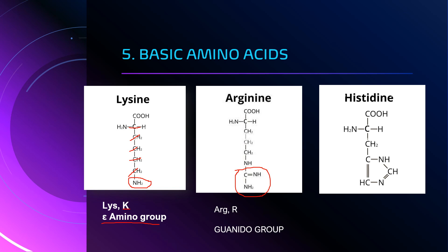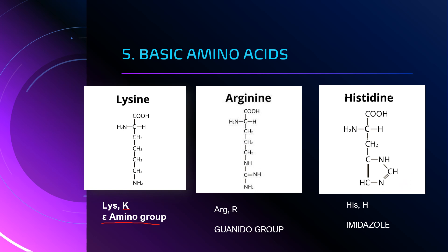The third basic amino acid is histidine. The three-letter code is HIS and the single-letter code is capital H. It has an imidazole ring as its special group. For lysine, arginine, and histidine, the portions beyond the alpha carbon structure represent the respective R groups.